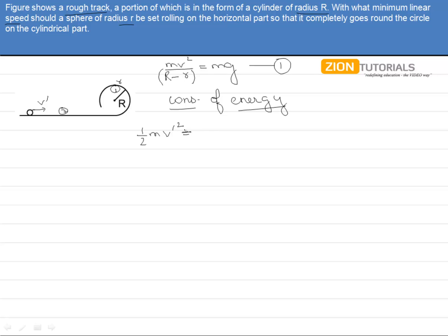Plus there will be some rotational energy, that is ½Iω², equals to mg(R - r) plus ½mv² plus ½Iω².